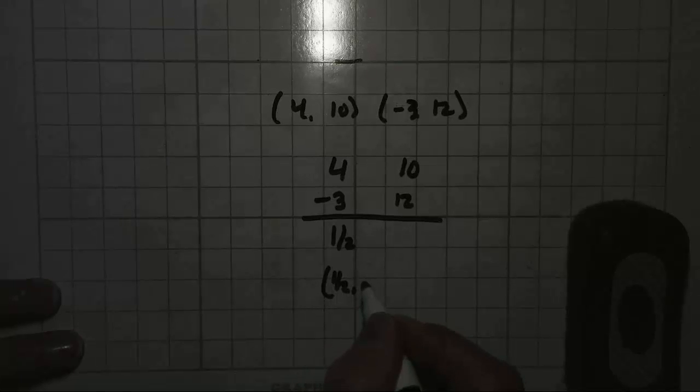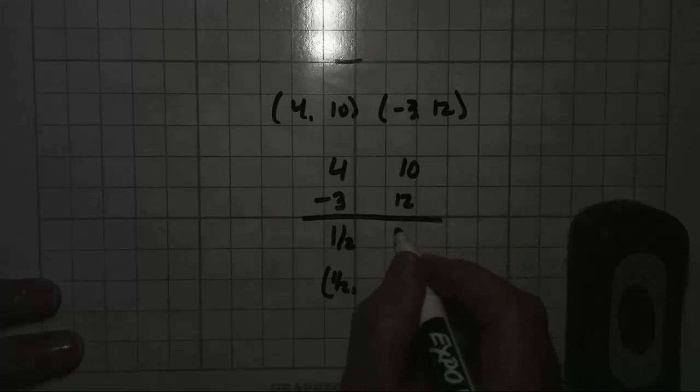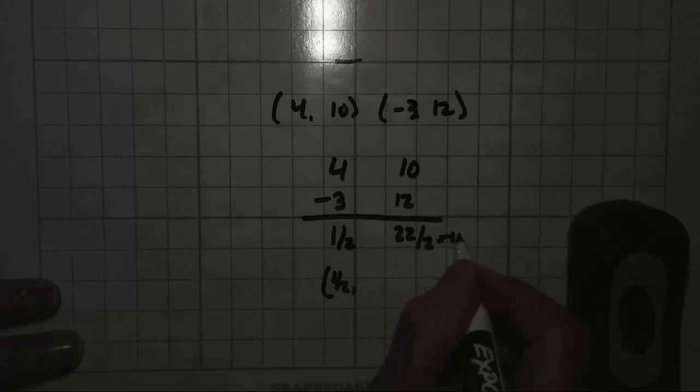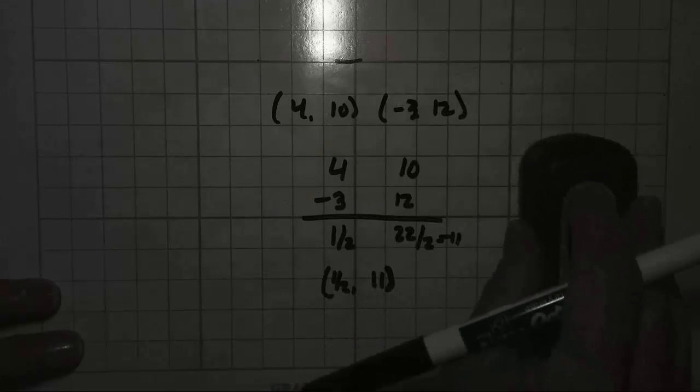It doesn't have to be a whole number in order to be correct, by the way. 10 plus 12, 22. 22 divided by 2 is 11. So your second coordinate of your midpoint is 11. So your midpoint is at 1 half and 11.